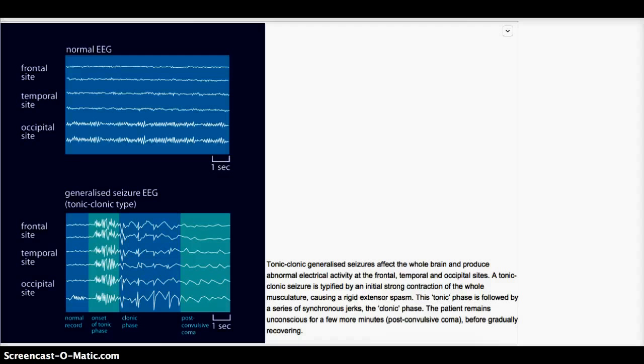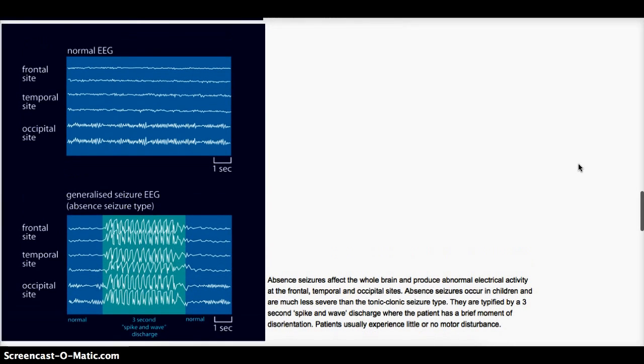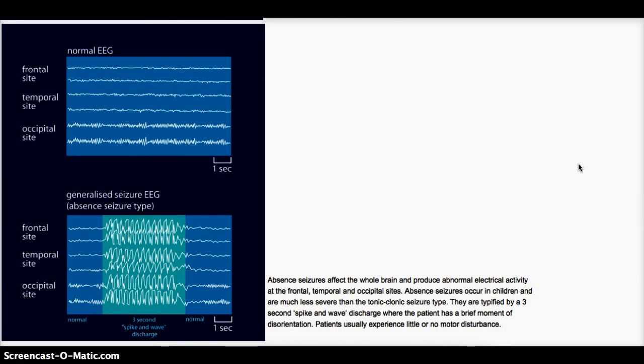This is the generalized seizure EEG, and we see how the spikes are all over. They are in the frontal and both hemispheres because they are present in both horizontal lines. And they're also present in temporal and also occipital. Now let's look at the absence seizure, how the absence seizure looks like, because it's slightly different than your generalized tonic-clonic. This is the absence seizure, and we see that there is a characteristic spike, and this is called the three-second spike and wave discharge. It's just present for three seconds, and this is how it looks like.